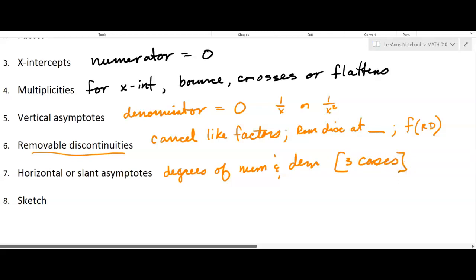So I always like to graph my asymptotes first, and then I start putting in the x-intercepts, the y-intercepts, and then finally we're going to try to sketch the graph.